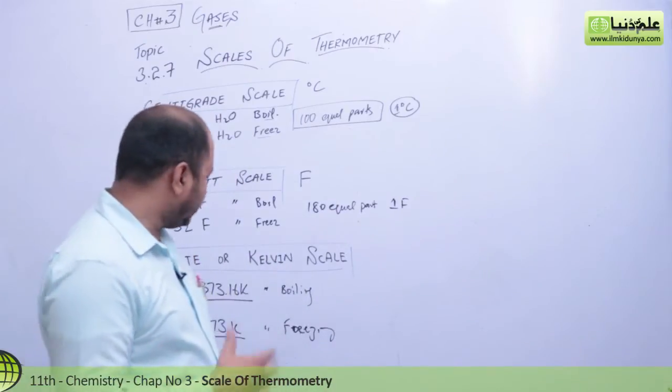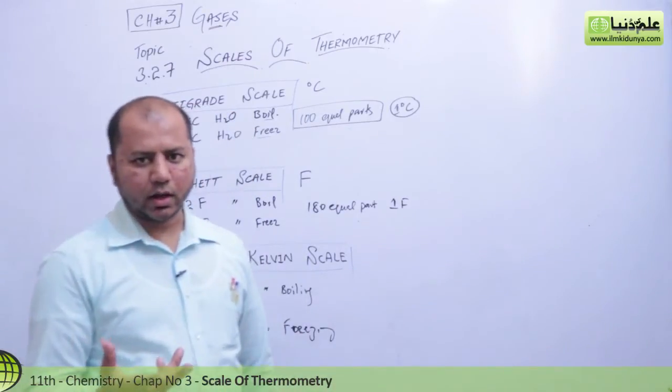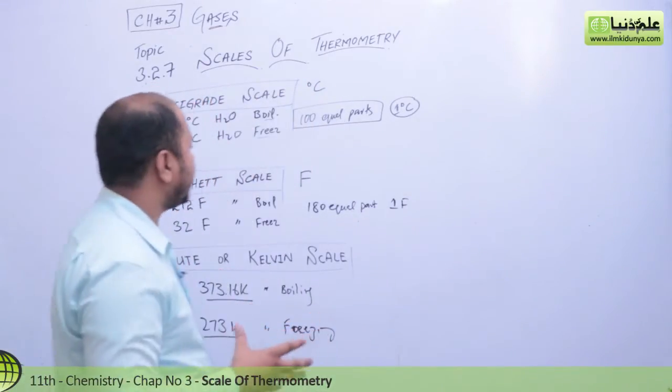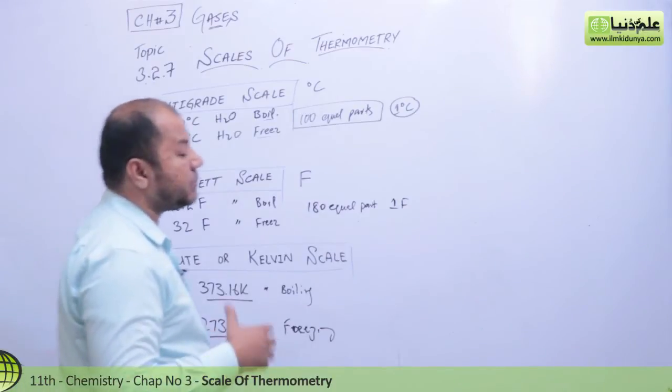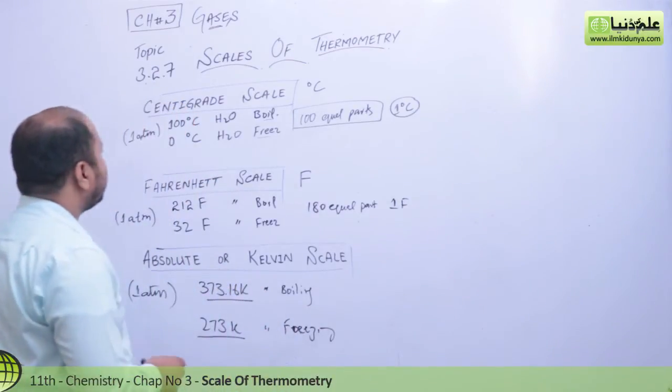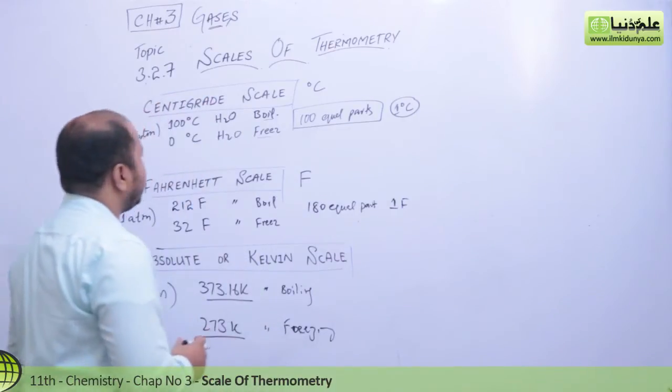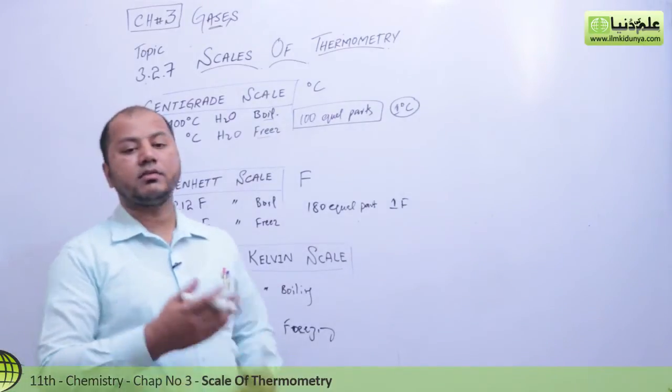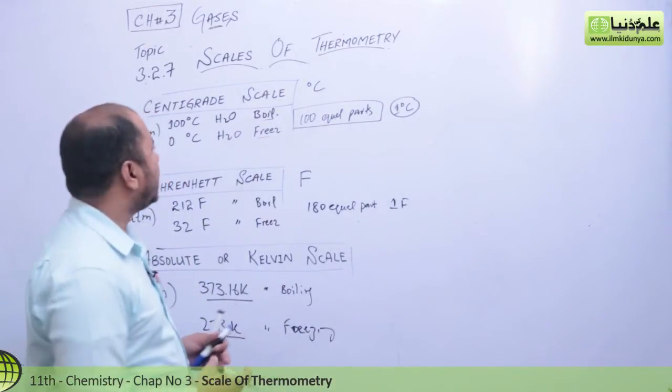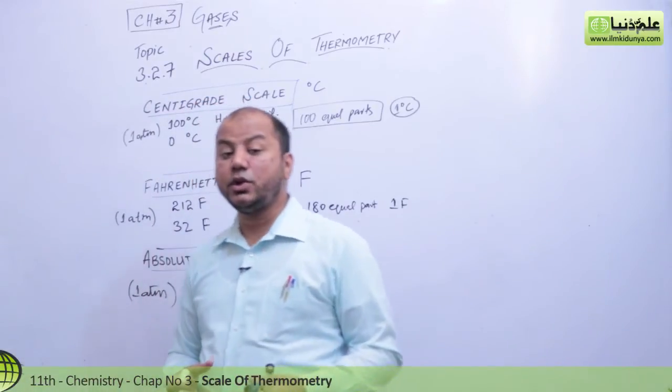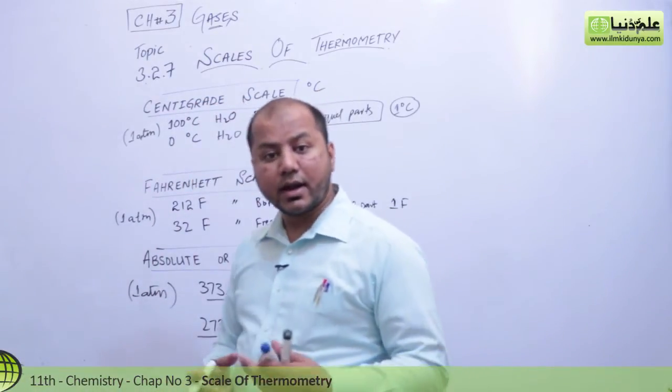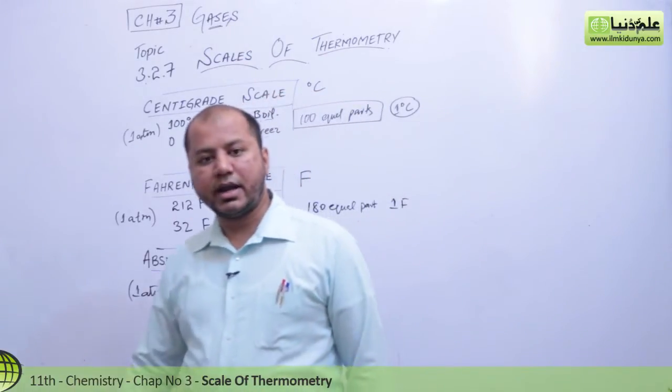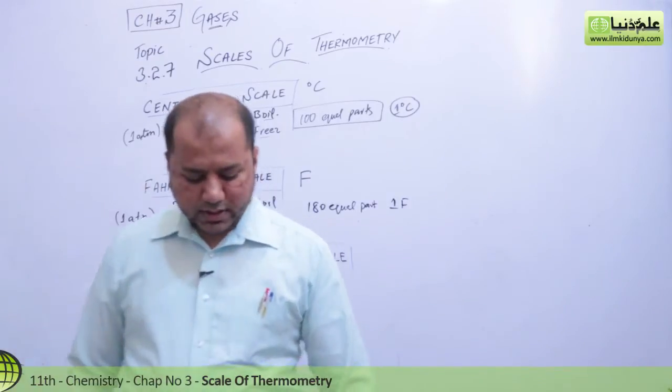These are the temperatures for the centigrade scale, Fahrenheit scale, and absolute or Kelvin scale. Now there is inter-conversion also. If you have a temperature in centigrade and need to convert it to Fahrenheit, or from Kelvin to Fahrenheit, there are conversion formulas.